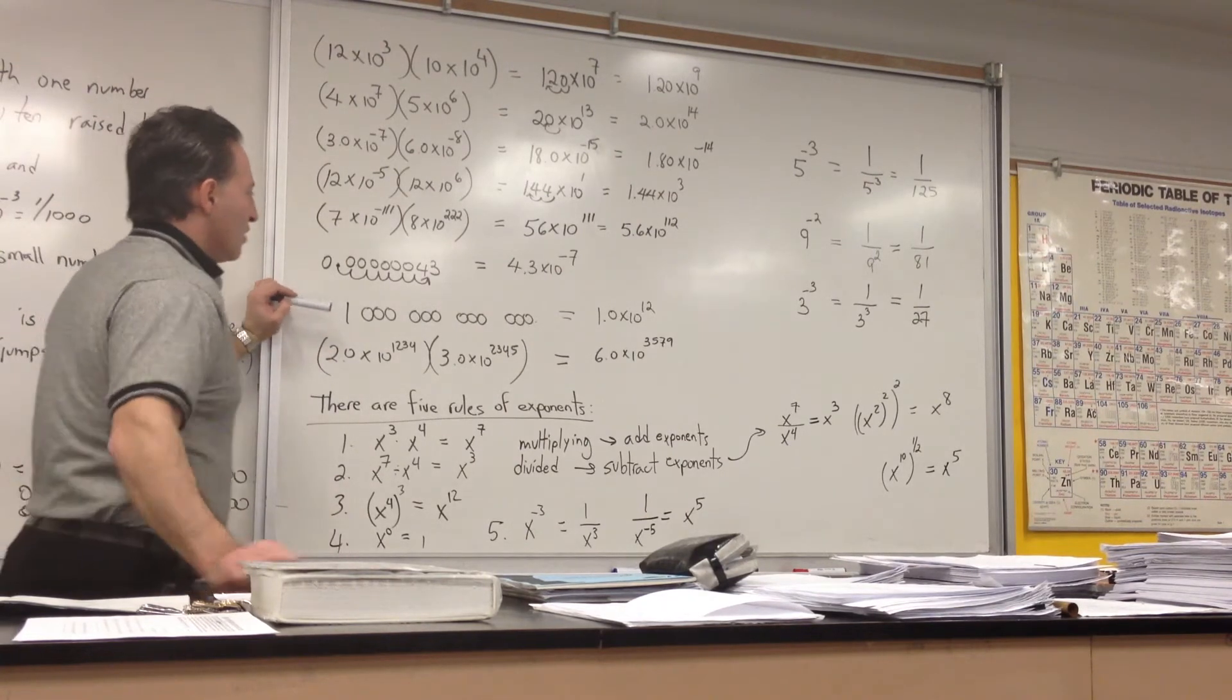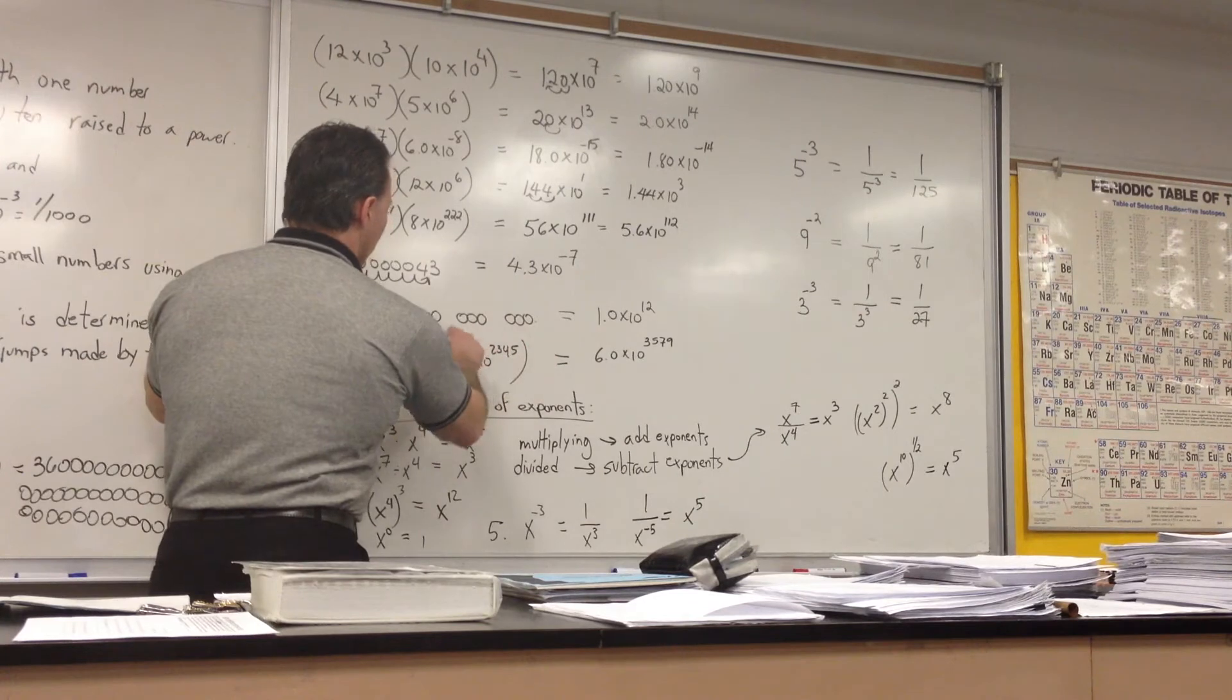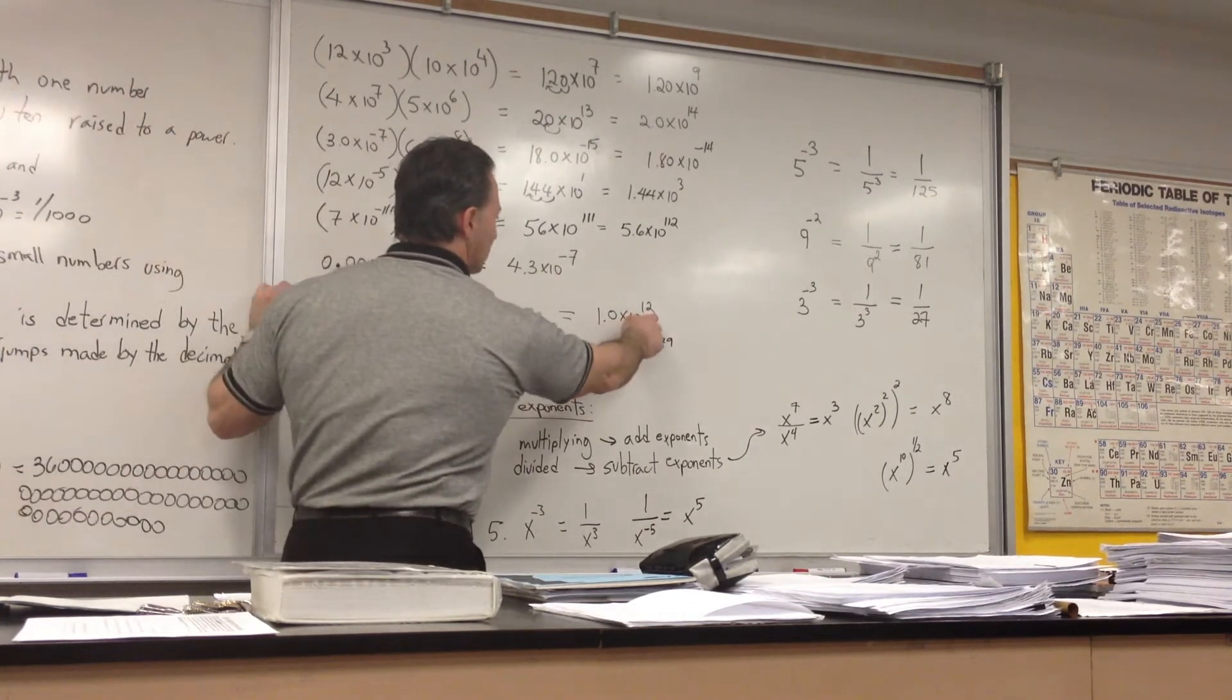This is 1 trillion. The decimal is here. You have to skip it over 12 times. Put it over here, so we put 10 to the positive 12.